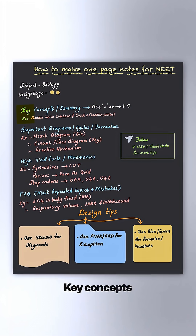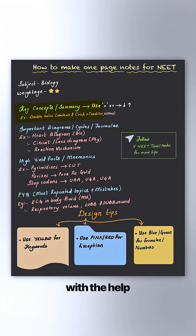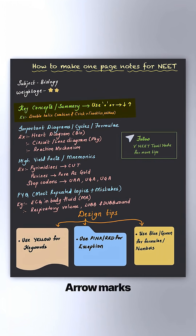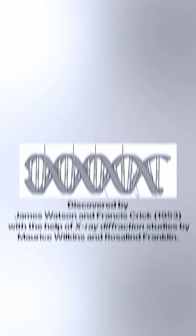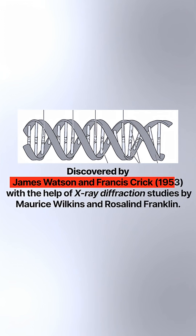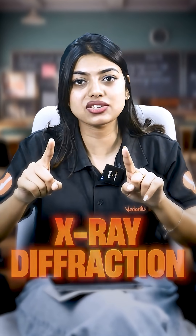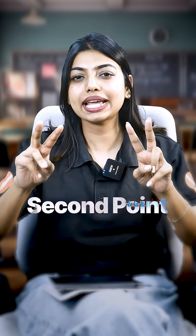First point: key concepts and summaries have to be written with the help of bullets and arrow marks. Make flowcharts. For example, the double helical structure was found by Watson and Crick, Wilkins and Rosalind Franklin — write that in a bracket or with an arrow mark, noting it was discovered with the help of X-ray diffraction. Those are the important points.